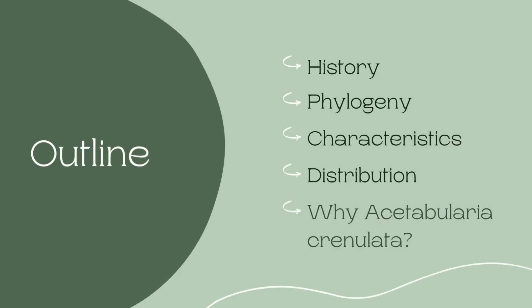Here is the outline for my report on Acetabularia creniolata. First, I will discuss the history of the species and its discovery. Then, I will describe the phylogeny of the species, its characteristics and distribution, and lastly, I will discuss why I chose Acetabularia creniolata to report on today.